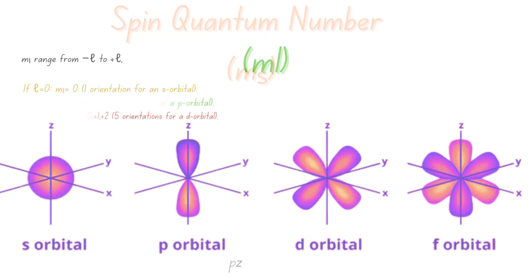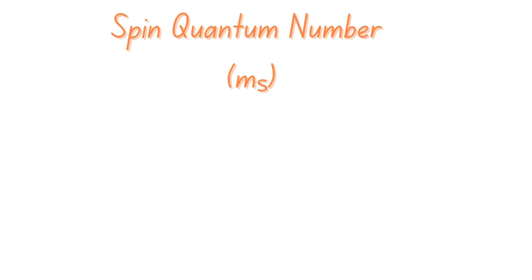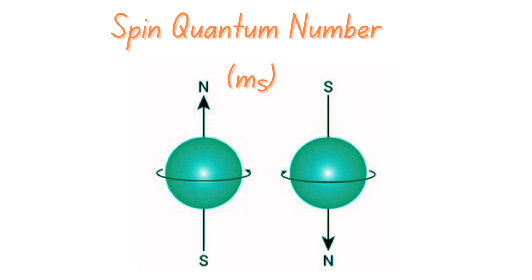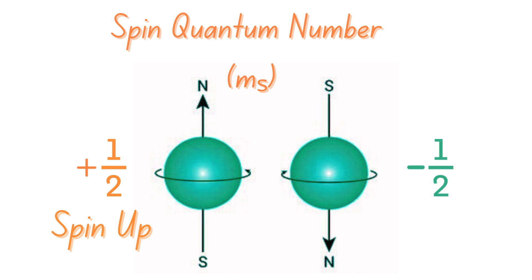Finally, let's look at the spin quantum number, ms. This describes the intrinsic angular momentum or spin of an electron within an orbital. It indicates the direction in which the electron is spinning, which generates a tiny magnetic field. The spin quantum number can only have two possible values, which is positive one-half, meaning spin up, or negative one-half, which is spin down.